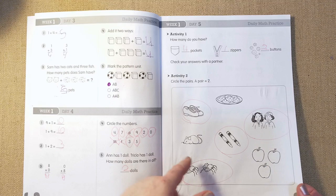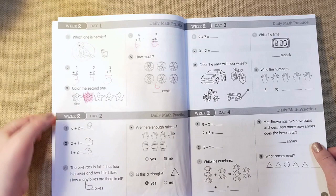And then activity two is to circle the pairs. A pair equals two. So she circled the pairs. You can color them. All of this stuff is black and white, so you can color and have fun.